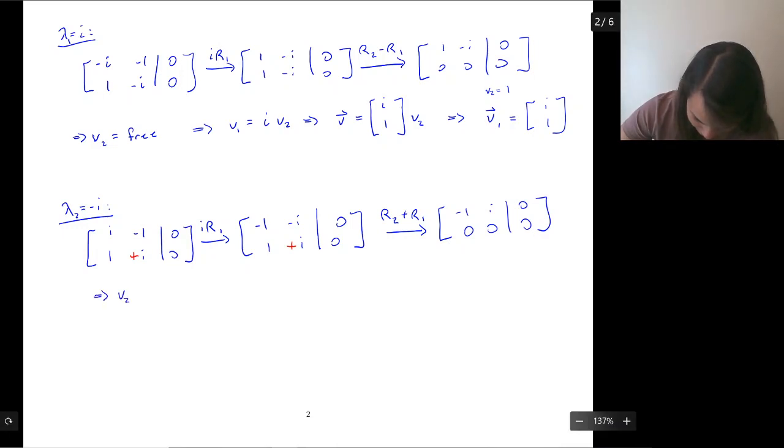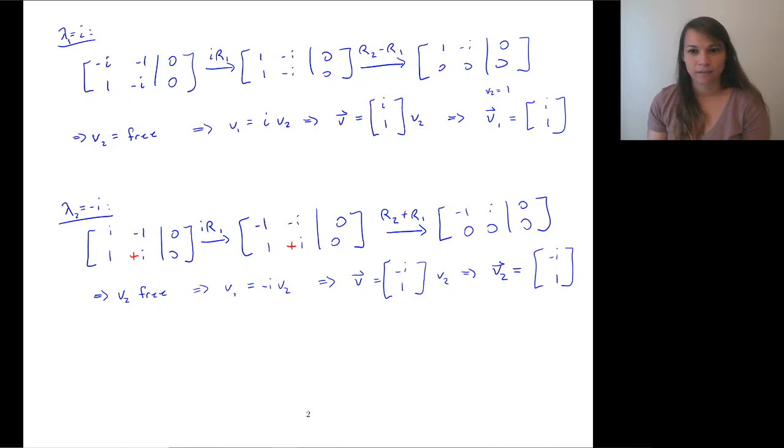So this is [i, -1, 1, i]. And then I'm going to do the same thing. I'm going to multiply that top row by i. And this time, we know i² is negative 1. And that's going to be a -i. So then, 1, -i. Sorry, I made a mistake. This would have been a +i, which would make that a +i. Okay. That gives us a row of zeros. So v₂ is free. So then, v₁ is going to be equal to -i v₂. So then, our v vector is [-i, 1] v₂. So then, the v₂ vector is this.